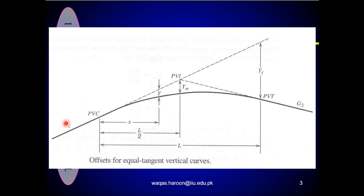G1 is known as the initial roadway grade, in percent, or expressed in feet per feet or meter per meter. This grade is also referred to as the initial tangent grade. G2 is the final roadway grade in percent, expressed in feet per feet or meter per meter, depending upon your requirement.